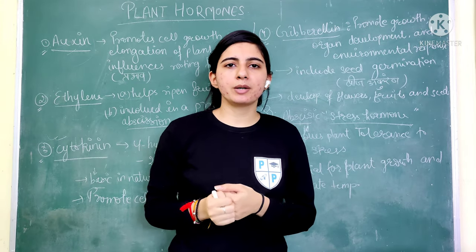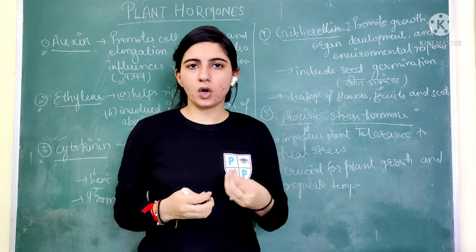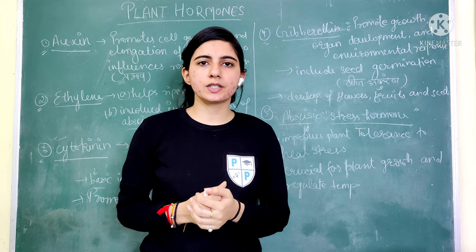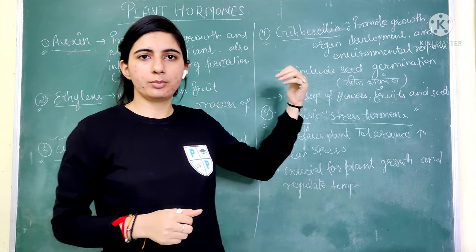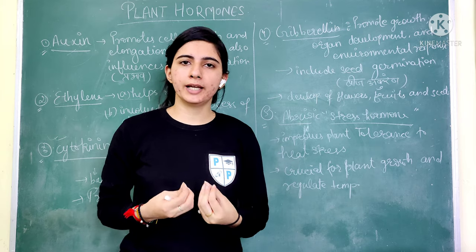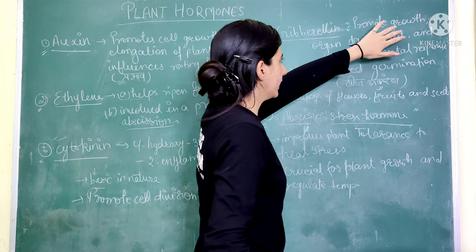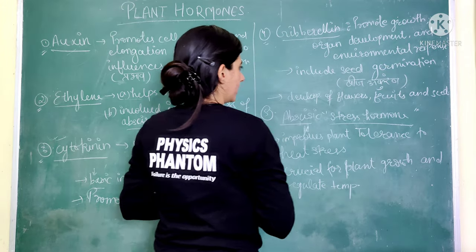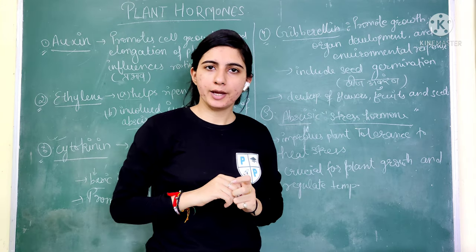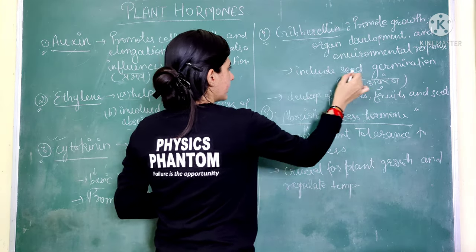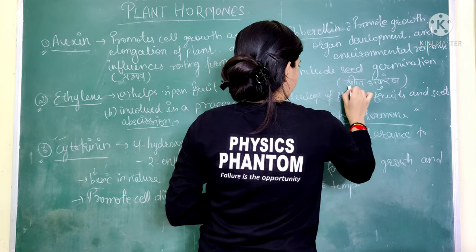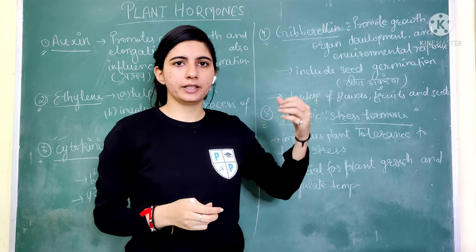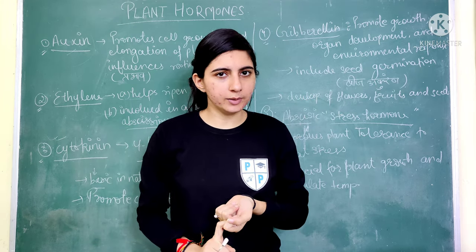Gibberellin promotes growth, promotes organ development, and is important for environmental response in plants. It is also very important for seed germination — when a seed begins to sprout into a plant and flowers or fruits come out. So which hormone is important for seed germination? Gibberellin. It also helps in the development of flowers, roots and seeds.